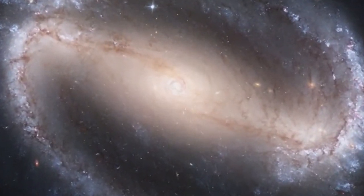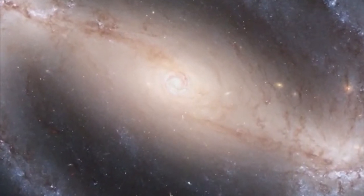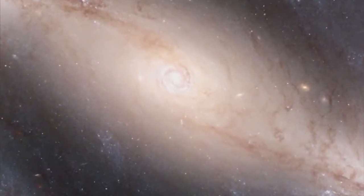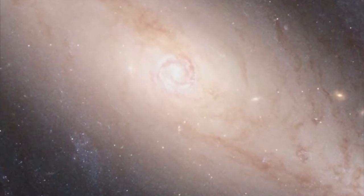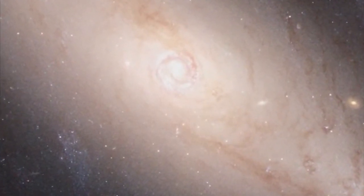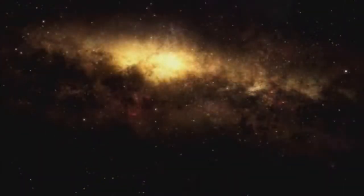But what about everything else we see in the heavens? The universe contains 100 to 200 billion galaxies. Each one contains about 100 billion stars, on average. Can the secular model explain these objects? No, it can't.